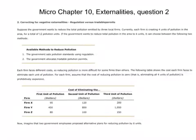So in a tradable pollution permit scenario, Firm Y is probably going to be a buyer, and Firms X and Z are probably going to be sellers.